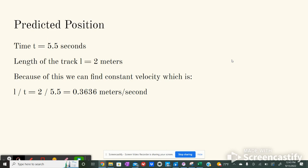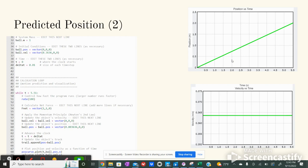The predicted position. We saw that the total time of the entire experiment was 5.5 seconds. The length of the track was equal to 2 meters. Because of this, we can find the constant velocity, which is found as length of the track divided by the time, or 0.3636 meters per second.